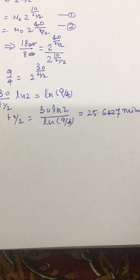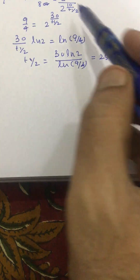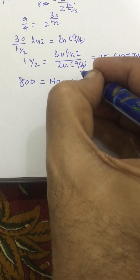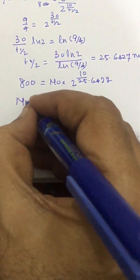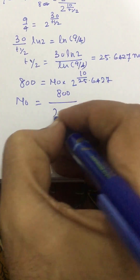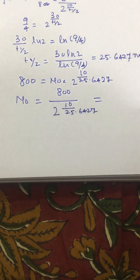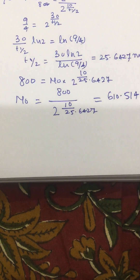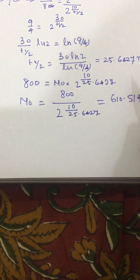So the doubling period is 25.6427 minutes. Now we have to find out n₀. For finding n₀ we put the value of t-half back into the equation, and we get 800 equal to n₀ times 2 raised to the power 10 divided by 25.6427. Solving this we get the initial value of bacteria in the culture as 610.514. So this is our answer for Parts A and B — this is our doubling period and this is our initial count.